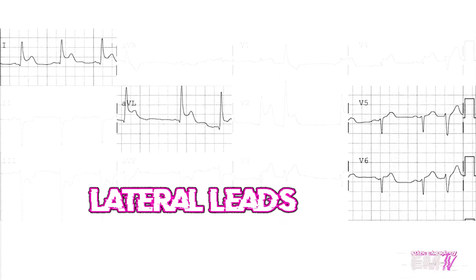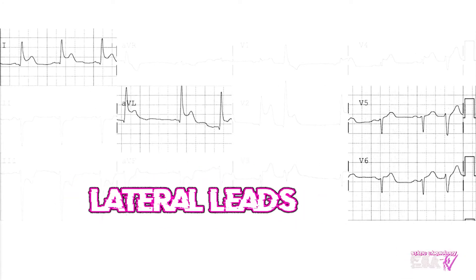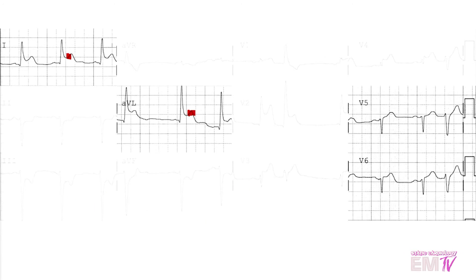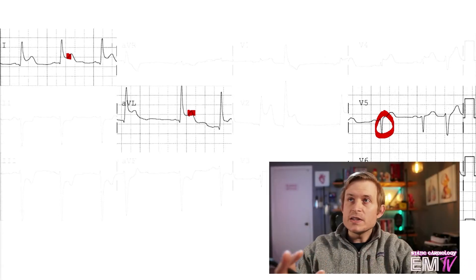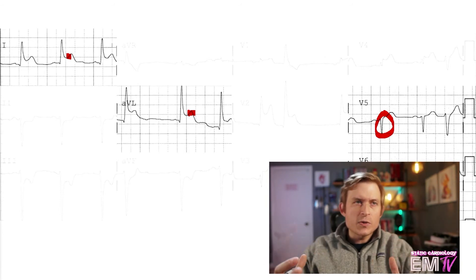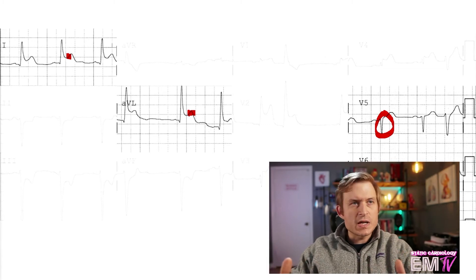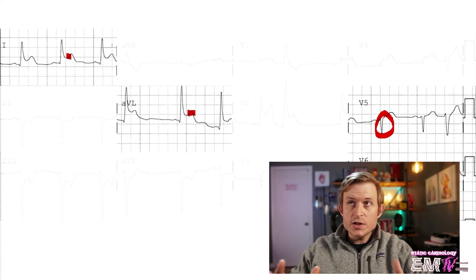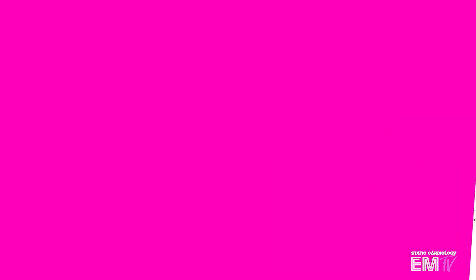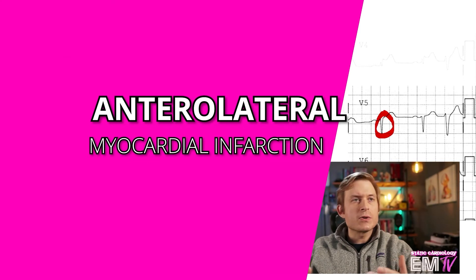In my lateral lead grouping, I'm seeing significant ST segment elevation in leads 1, AVL, and then possibly V6, though that may be on the fence. In V5, it looks like it's not quite enough to make that determination. However, in order to make a positive identification of a STEMI, you need at least two leads within an anatomically contiguous lead grouping to be elevated. Knowing that, I am seeing lateral involvement here. It's more significant in the anterior leads, but I would diagnose this as an anterolateral STEMI or an anterolateral MI.